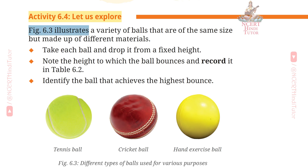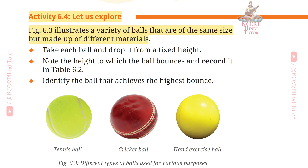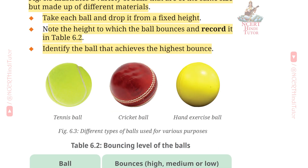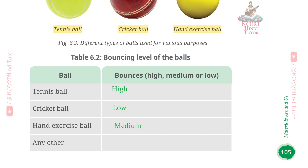Activity 6.4: Let us explore. Figure 6.3 illustrates a variety of balls that are of the same size but made up of different materials. Take each ball and drop it from a fixed height. Note the height to which the ball bounces and record it in Table 6.2. Identify the ball that achieved the highest bounce. Balls tested: 1. Tennis ball, 2. Cricket ball, 3. Hand exercise ball.